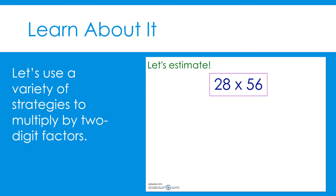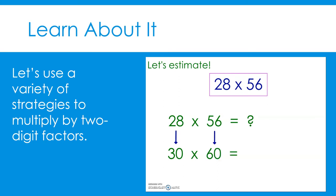First, let's estimate the product of 28 times 56. This will help us determine if our answer is reasonable once we solve. To estimate the product, we can round one or both factors to create a similar problem that is easier to solve mentally. Let's round 28 to the nearest 10 — we can round 28 to 30. 56 is also difficult to multiply mentally, so let's round 56 to 60. Our estimated problem is 30 times 60, which equals 1,800. Therefore, our real product should be close to 1,800.